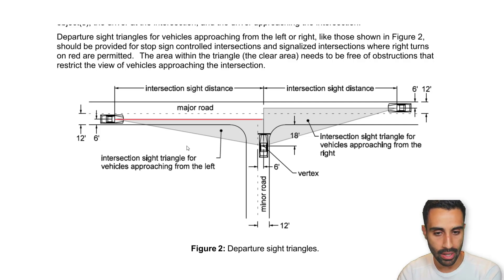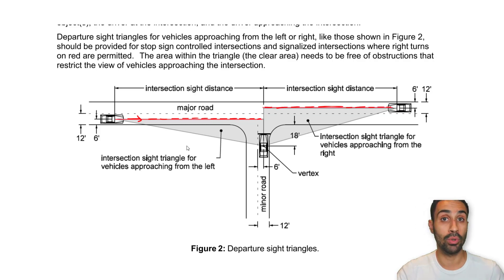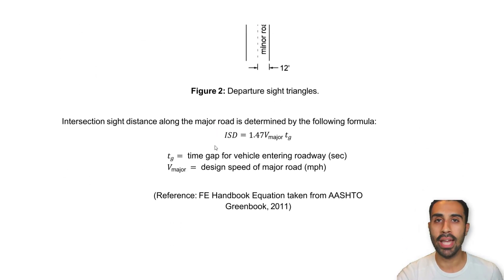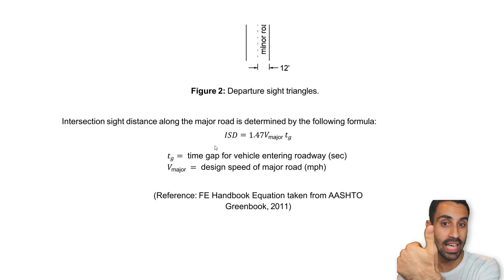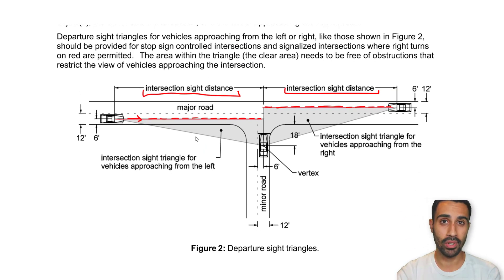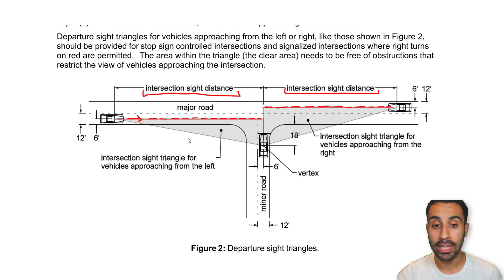The intersection sight distance is the horizontal distance of this 90-degree triangle with respect to the departure sight triangle, measured to the midpoint of the vehicle and with respect to the center line of the travel lane. For example, if you're stopped and want to make a left turn, you need that area cleared. The ISD equation is in the handbook: ISD = 1.47 × v_major × t_g. Notice that 1.47 is also used in the SSD definition.